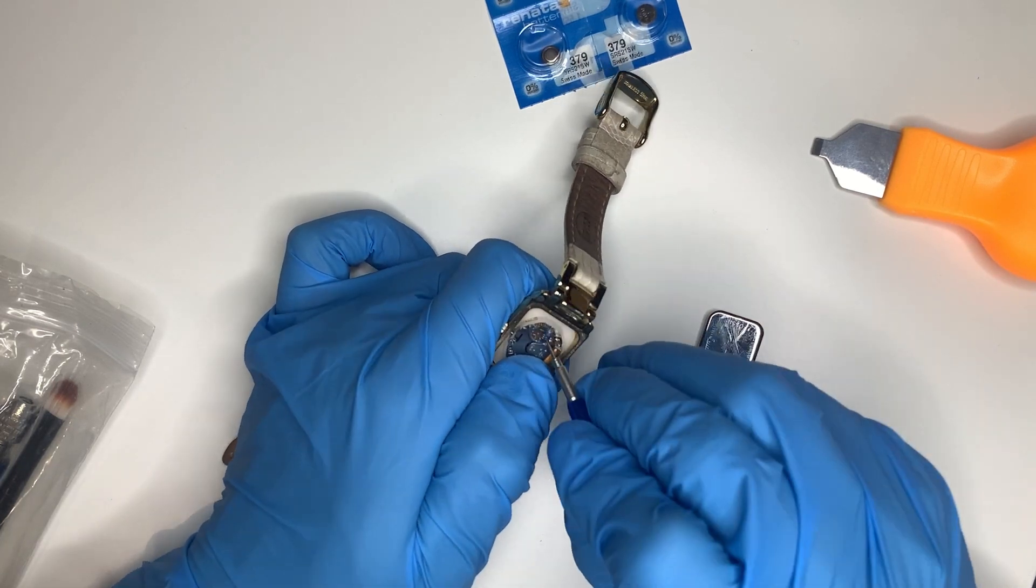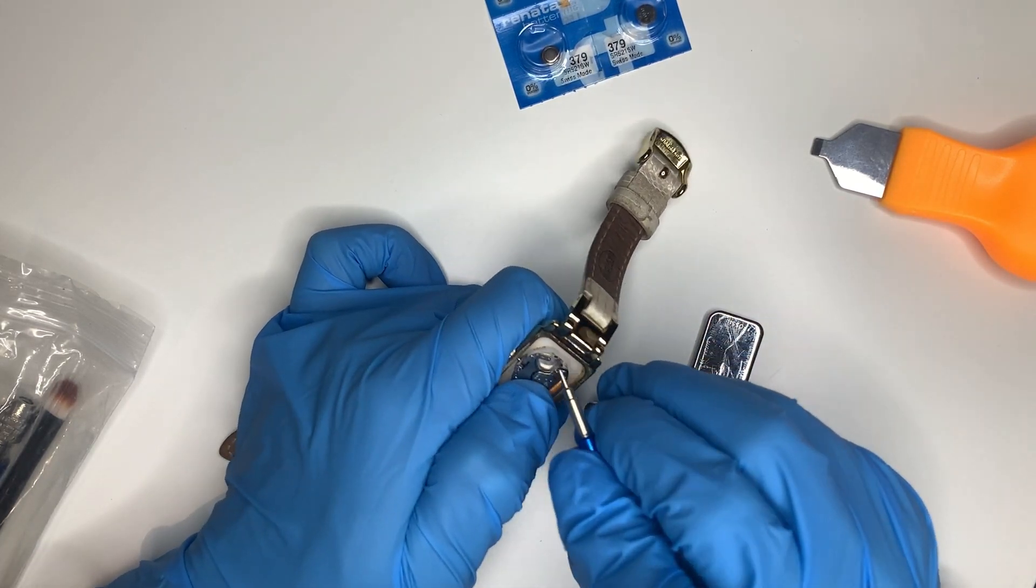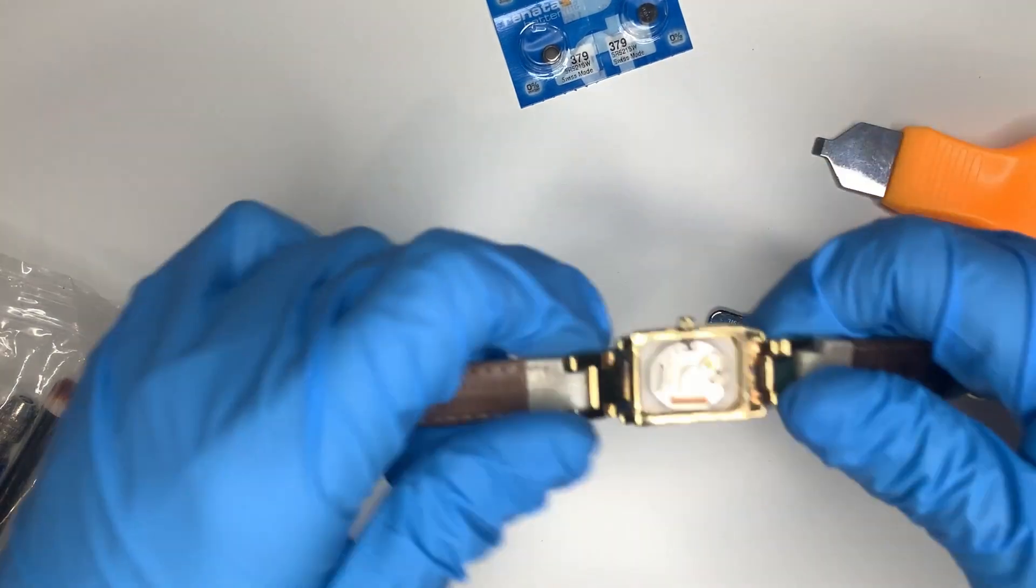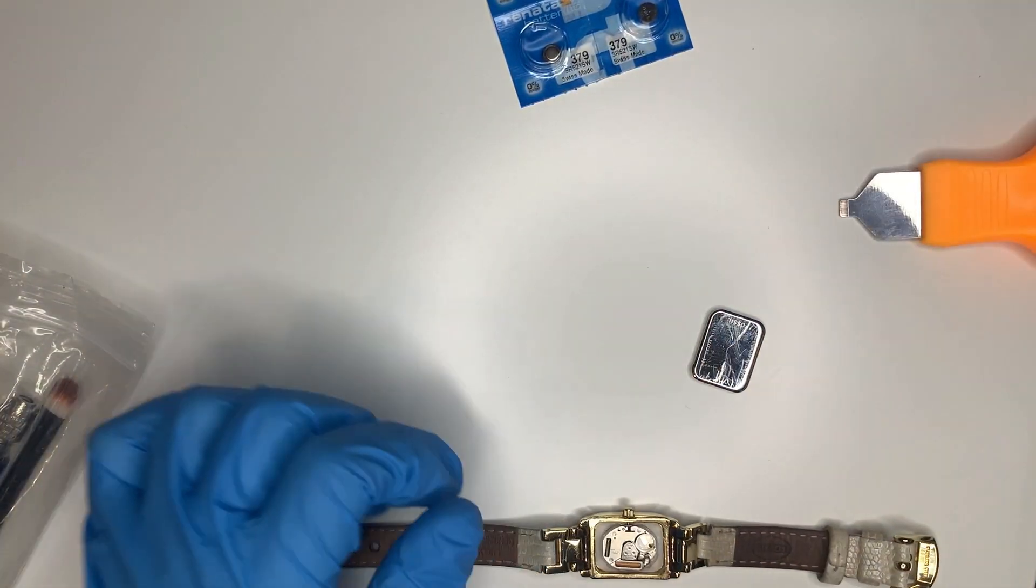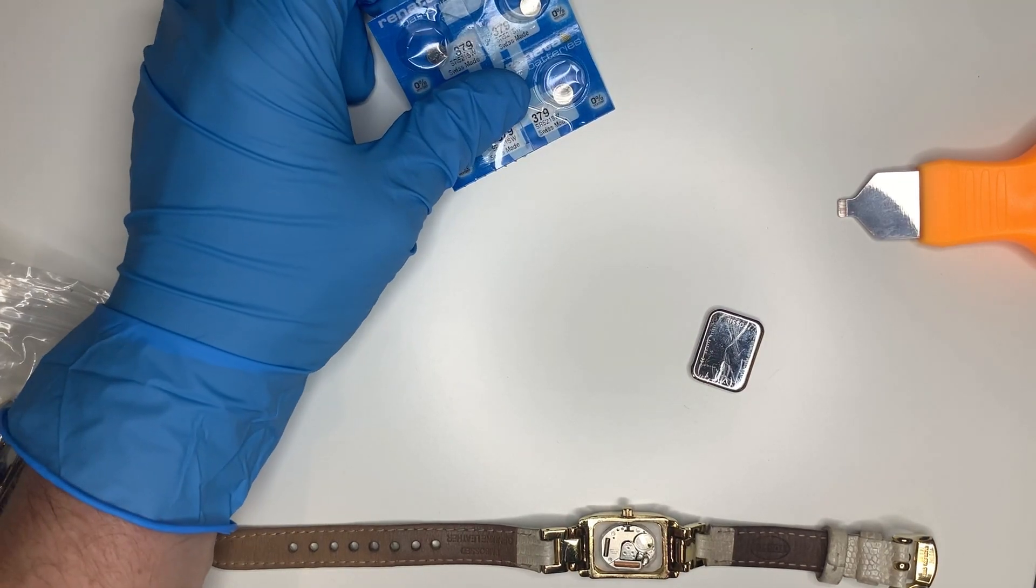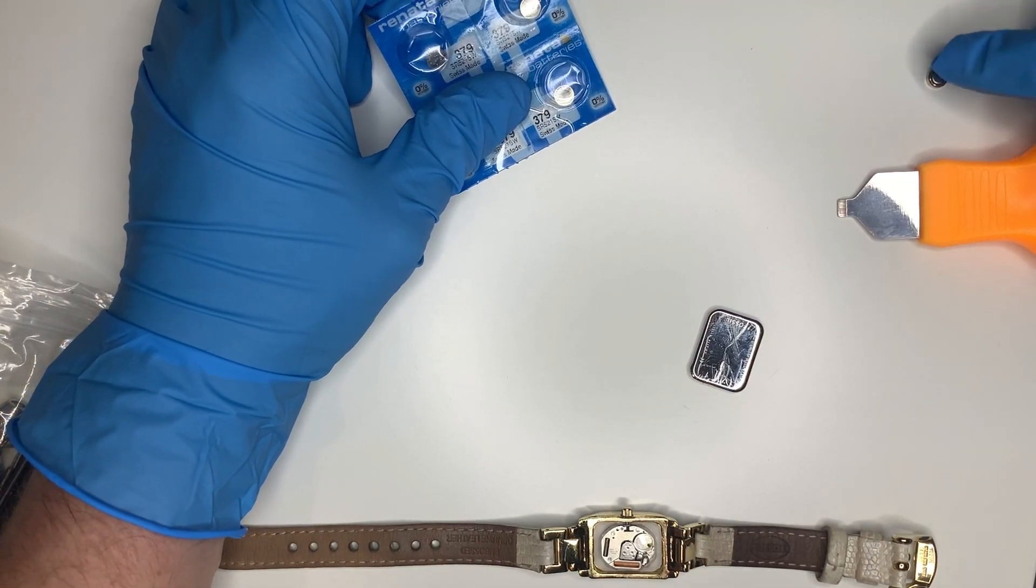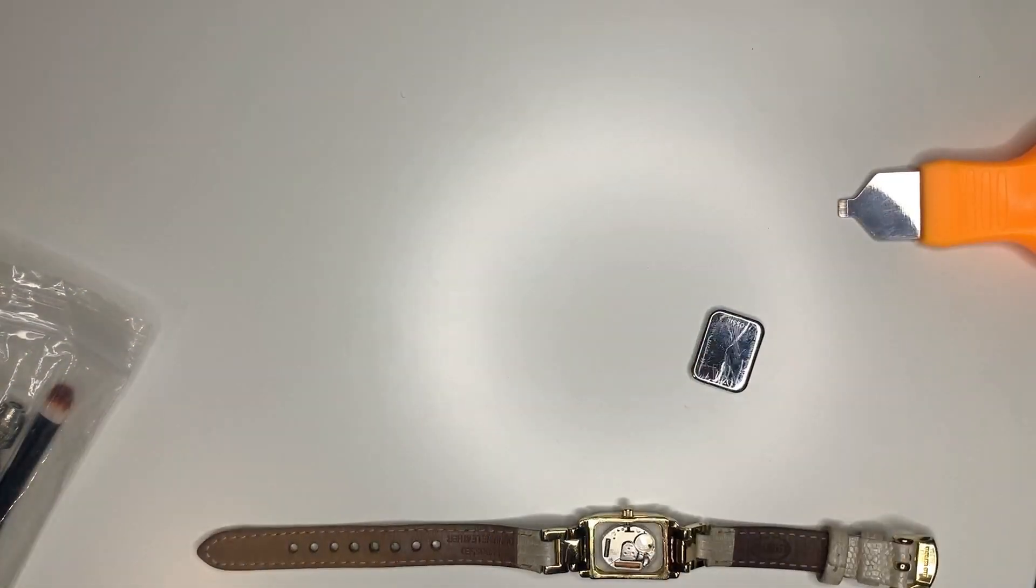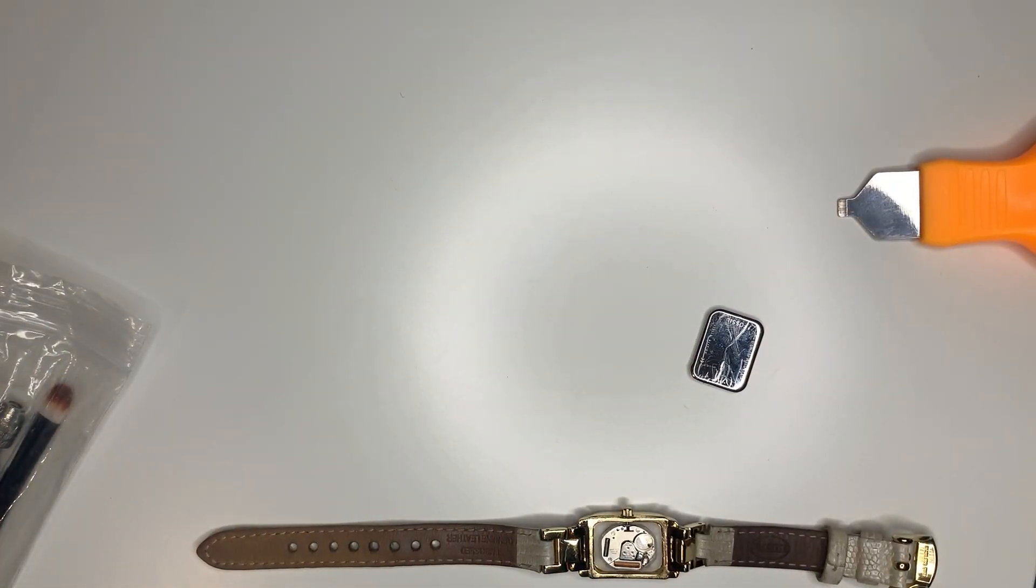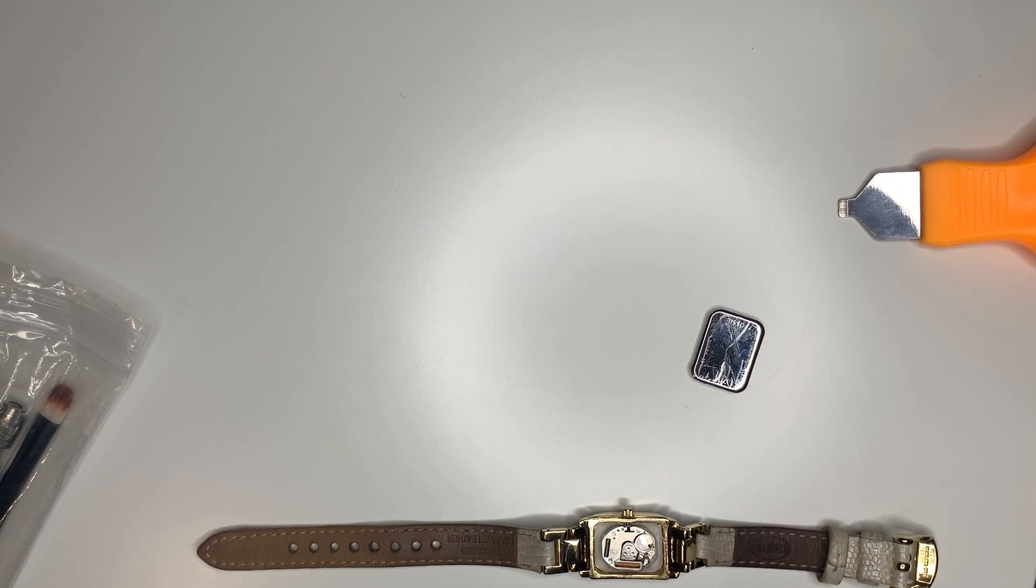There we go, battery out. Put that battery to one side. Make sure you dispose of these safely in some sort of battery bin or recycling center, because otherwise children can get hold of those and swallow them. It's really not good.